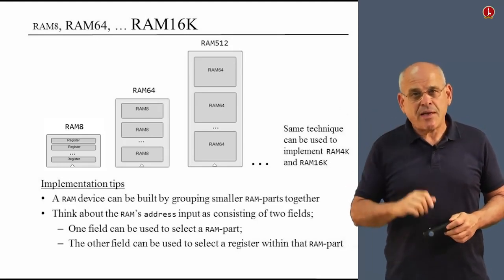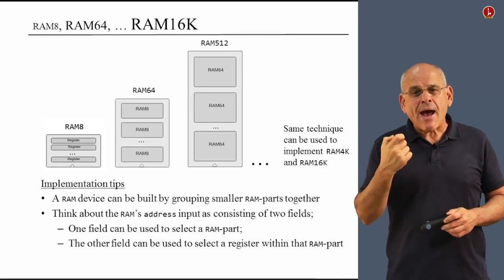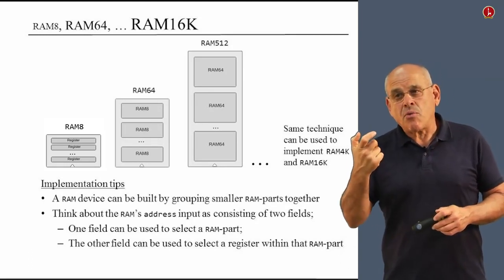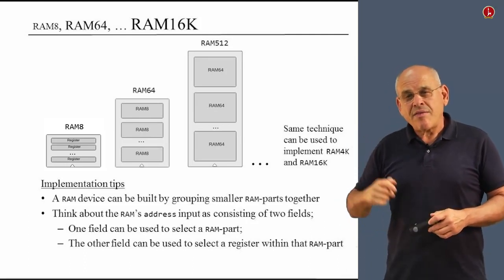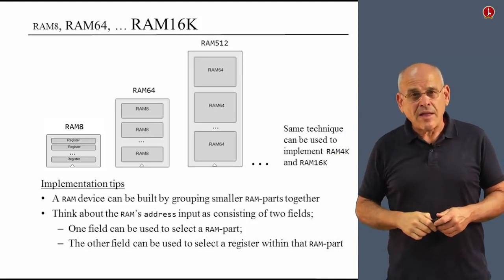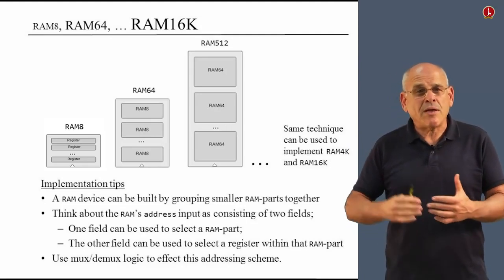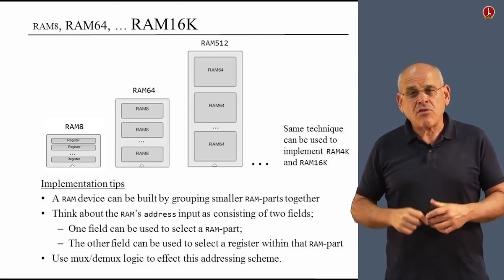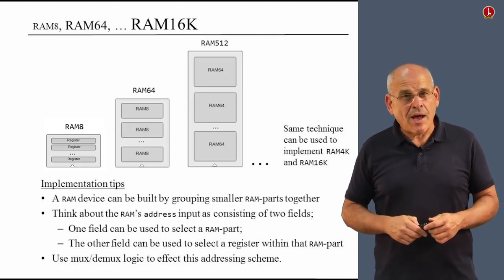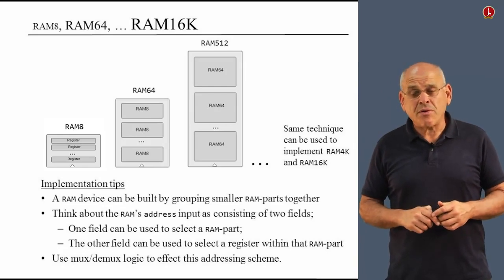And we can think about the address input as a binary value that consists of two logical fields. One field can be used to select the exact RAM part on which you want to operate. And the second field can select the very register within this RAM part that you want to affect by either reading or writing something into this register. So taken together, these two tricks can enable you to build RAM devices of arbitrary length. And you use mux and demux gates in order to affect this hierarchical addressing scheme that I just described. So once again, you have here enough tips to enable you to complete the implementation on your own using HDL.